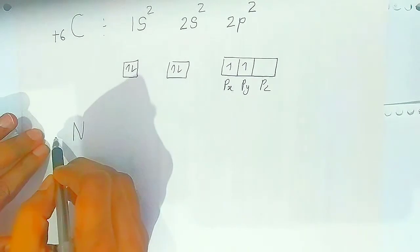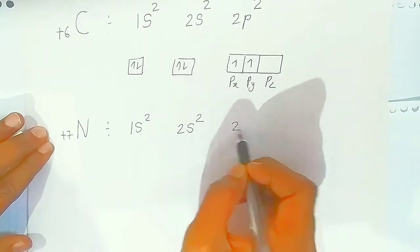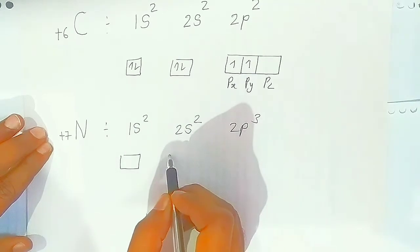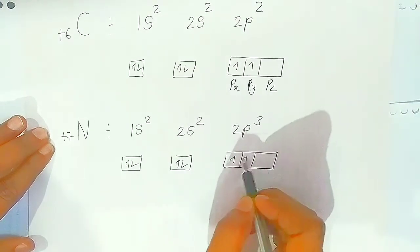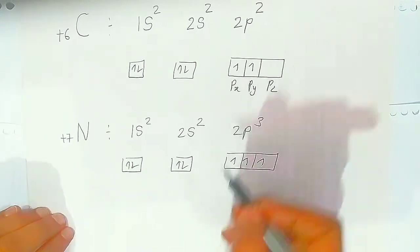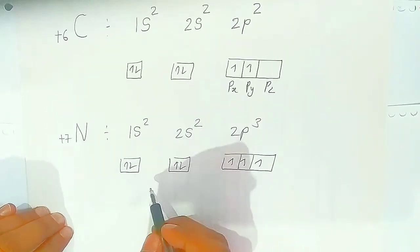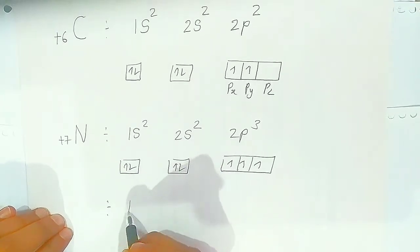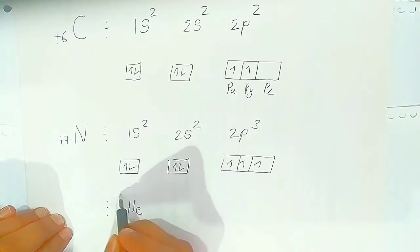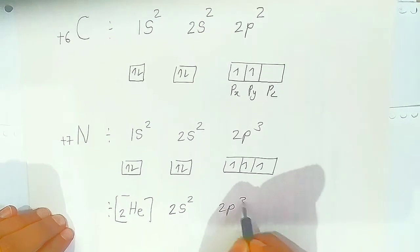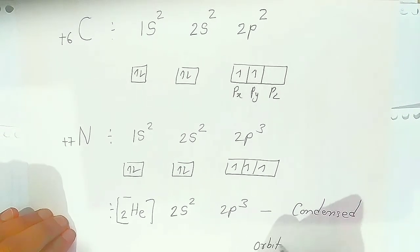For nitrogen, atomic number 7, the electronic configuration is 1s2 2s2 2p3. In the orbital diagram: 1s2, 2s2, and each of the three p sub-cells has one electron. From this you can determine the number of unpaired electrons. Since helium always has 1s2, you can write the condensed electronic configuration as [He] 2s2 2p3. This is called the condensed orbital notation.